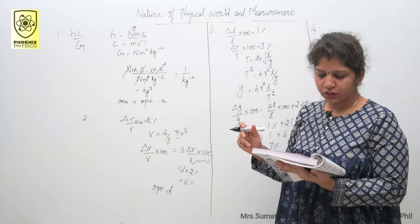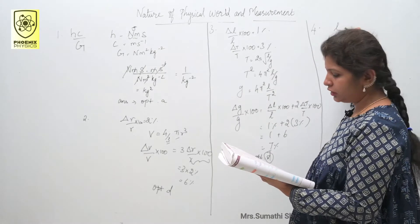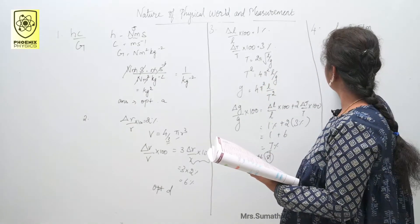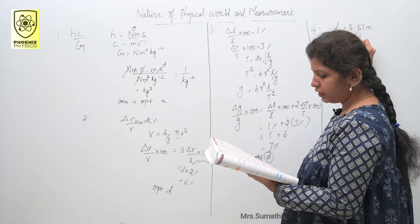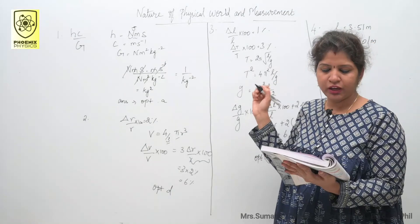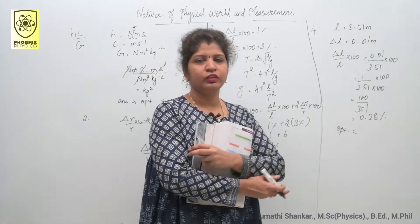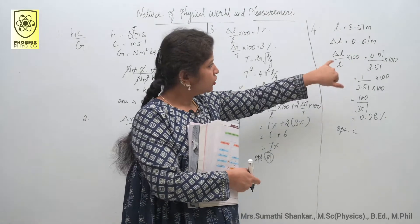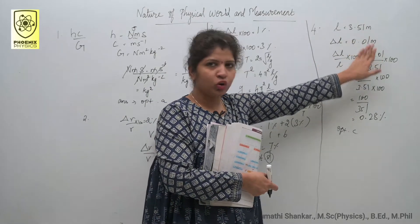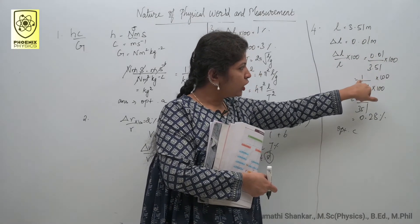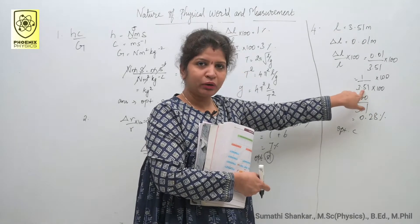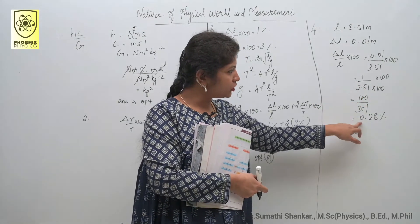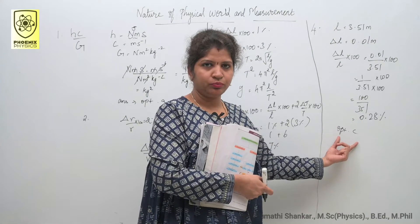Fourth question: the length of a body is measured as 3.51 m, and the accuracy is 0.01 m. So delta l equals 0.01 m. The percentage error is delta l by l into 100, which is 0.01 by 3.51 into 100. That is 100 divided by 351, giving approximately 0.28%. The answer is option C.